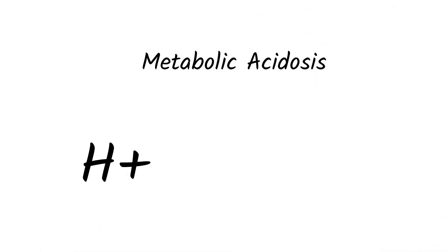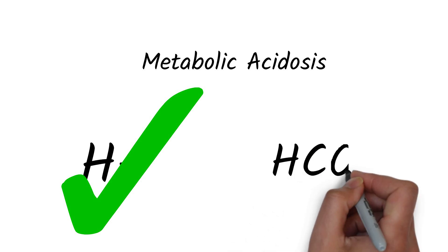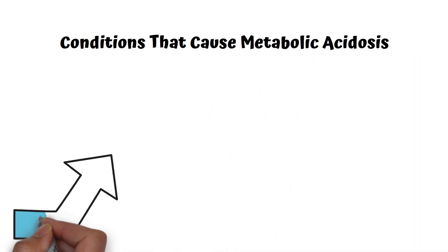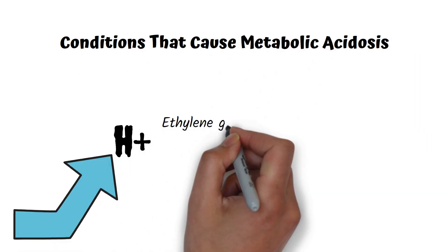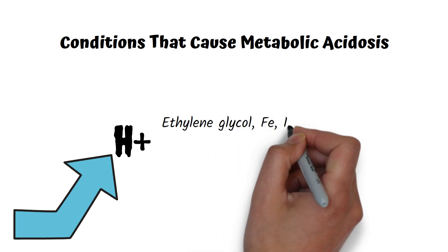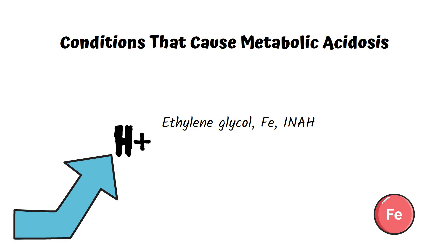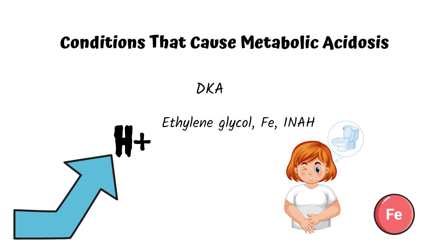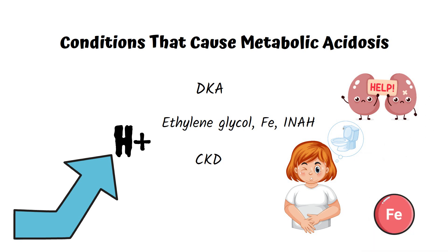Metabolic acidosis can happen due to the buildup of hydrogen ions in the blood or the removal of bicarbonate ions from the blood. A buildup of hydrogen ions can happen during ingestion of substances like ethylene glycol (also known as antifreeze), iron, and isoniazid. It can also happen during diabetic ketoacidosis, and in conditions like CKD where scarred kidneys are unable to properly excrete hydrogen ions.